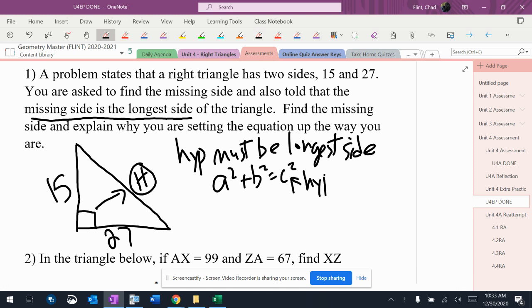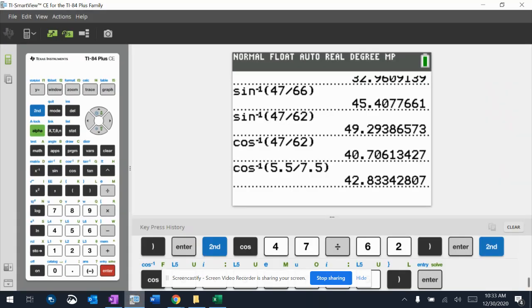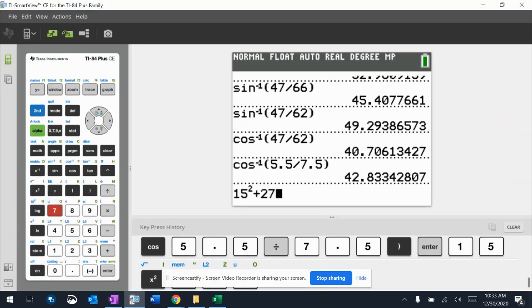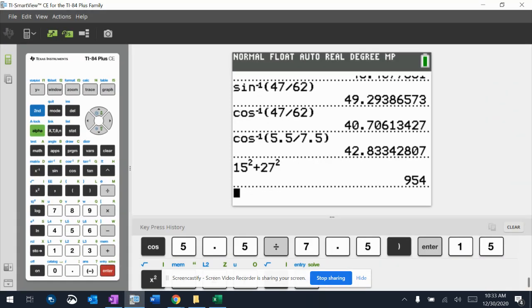And I'm going to move it over that hypotenuse. And then I'm going to say 15 squared plus 27 squared equals C squared. And then I'm just going to solve it. So 15 squared plus 27 squared is 954.